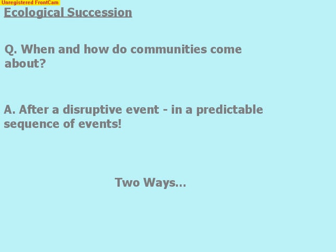Chapter 37 spends a couple of pages looking at what's called ecological succession. Ecological succession is how communities come about, and there are two ways that communities can come about.